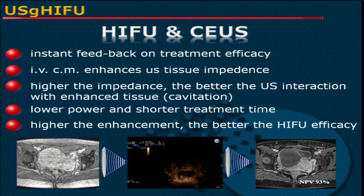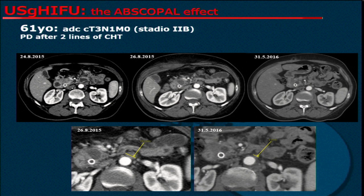This is another patient with a huge lesion in the head involving the bile duct, which is why the patient had a metallic stent placed. The patient had two lines of chemotherapy when referred to me. This shows the necrotic reaction after HIFU treatment, and here you can see the lymph node that a few months later shrunk — it was very distant from the site of the primary tumor treatment.